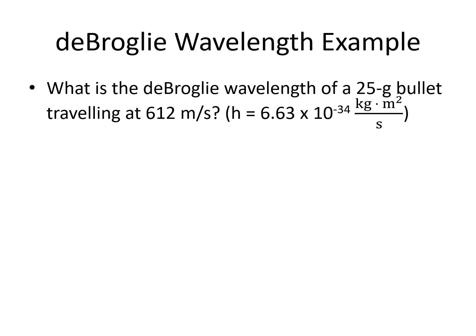Here is an example. What is the de Broglie wavelength of a 25 gram bullet traveling at 612 meters per second? h equals 6.63 times 10 to the minus 34 kilograms meters squared per second. The first thing we need to do is check our units. Mass is given to us in grams, but it needs to be in kilograms. We convert 25 grams into kilograms by dividing by 10 to the third, and we come out with 0.025 kilograms.